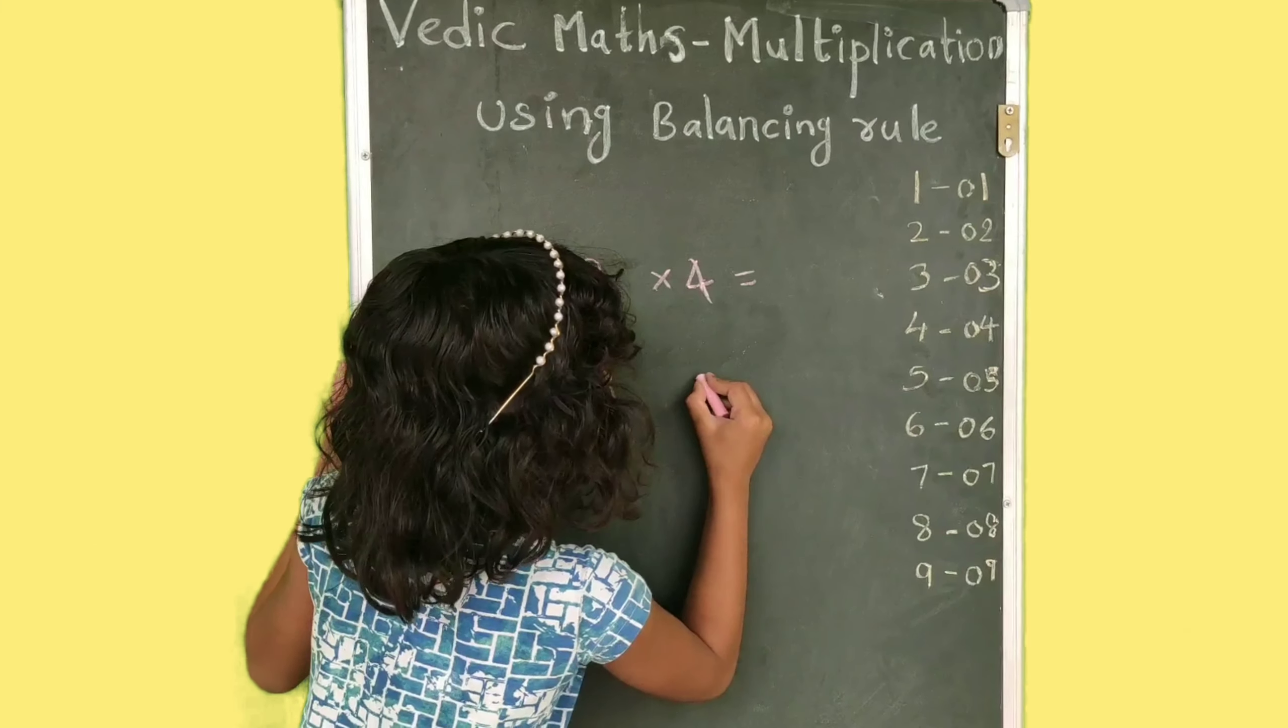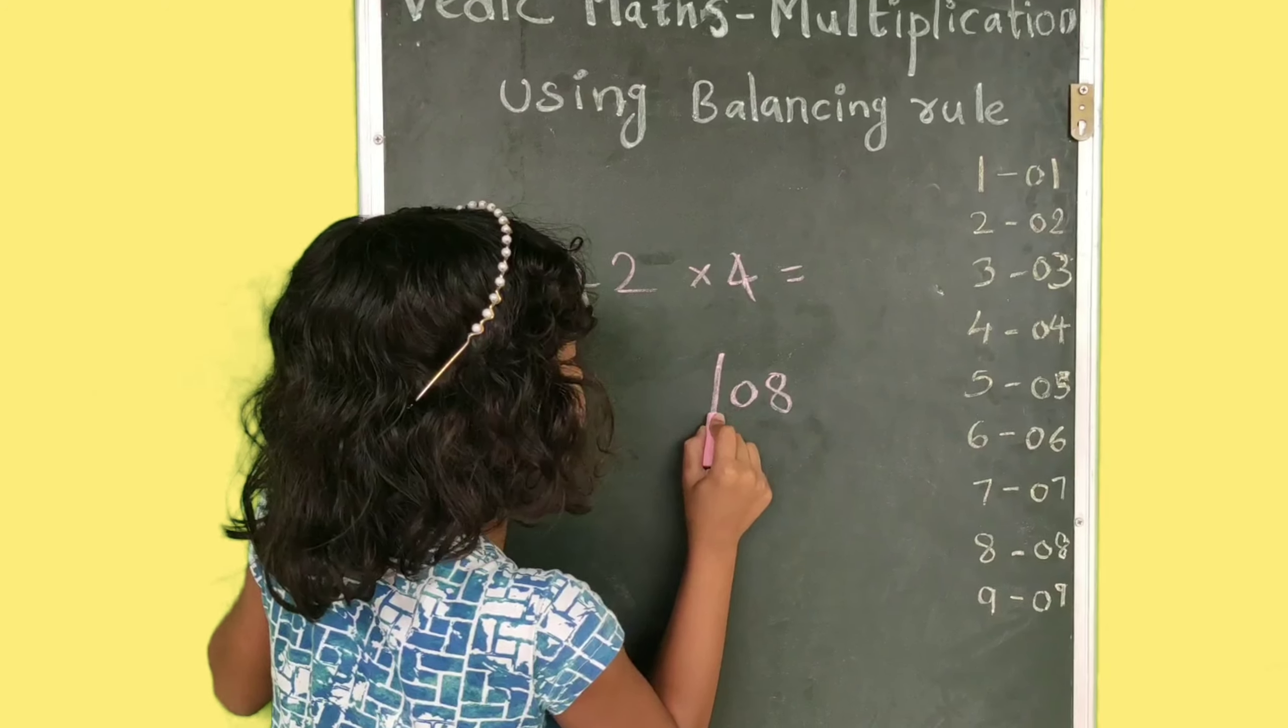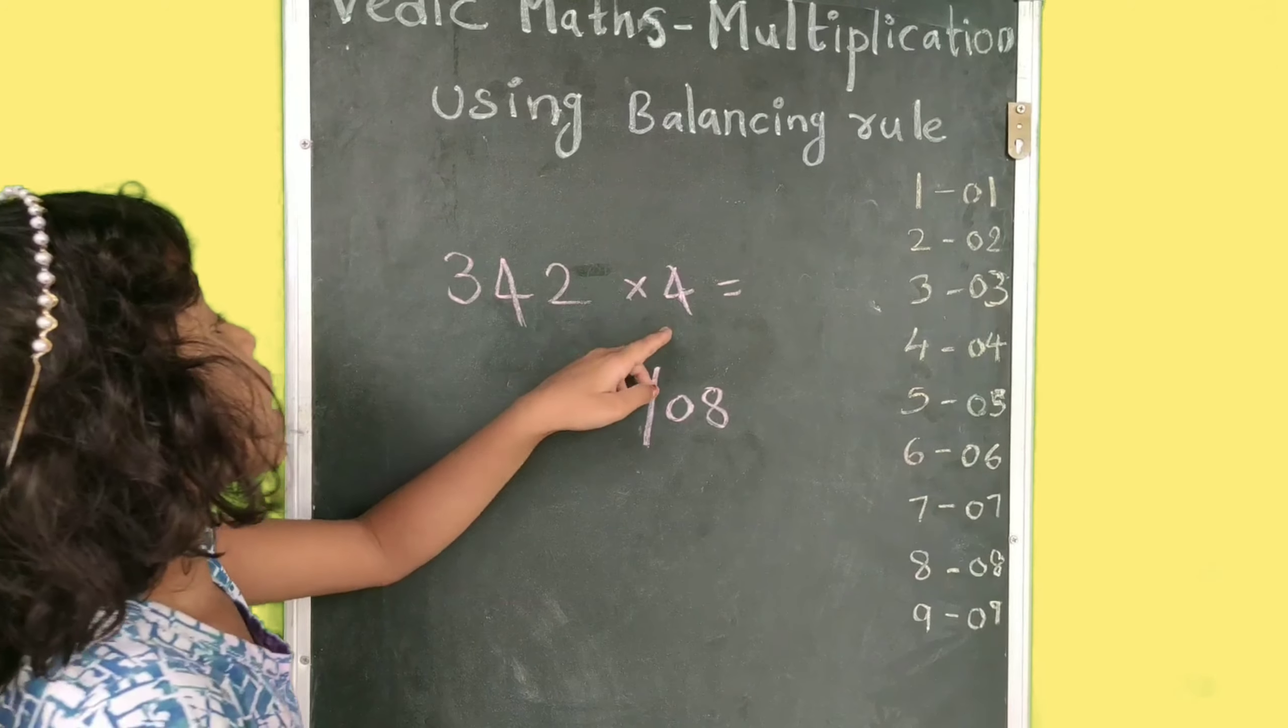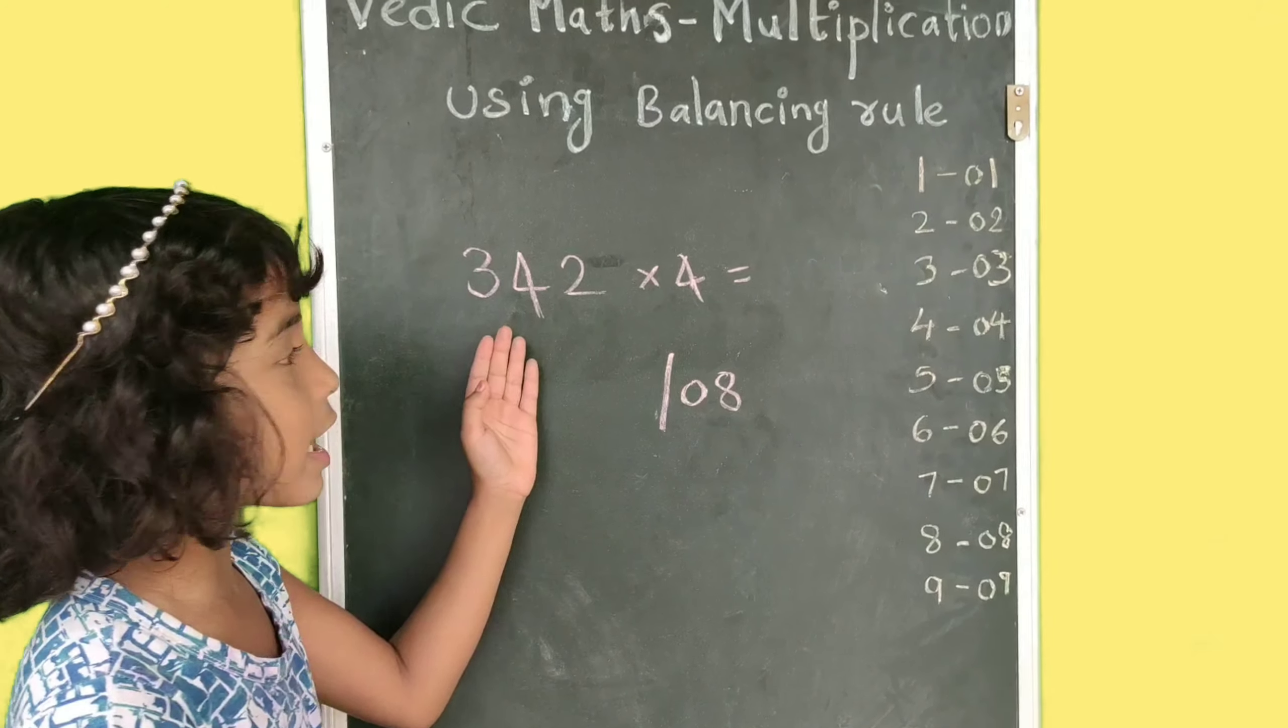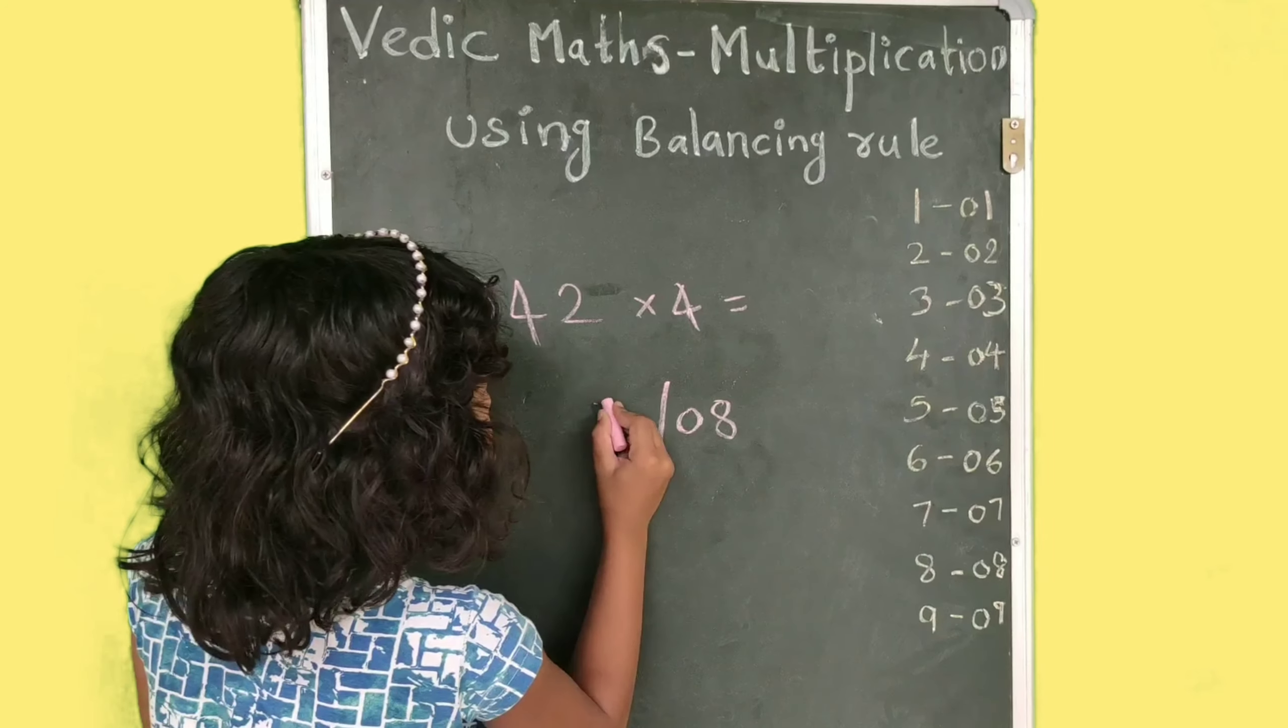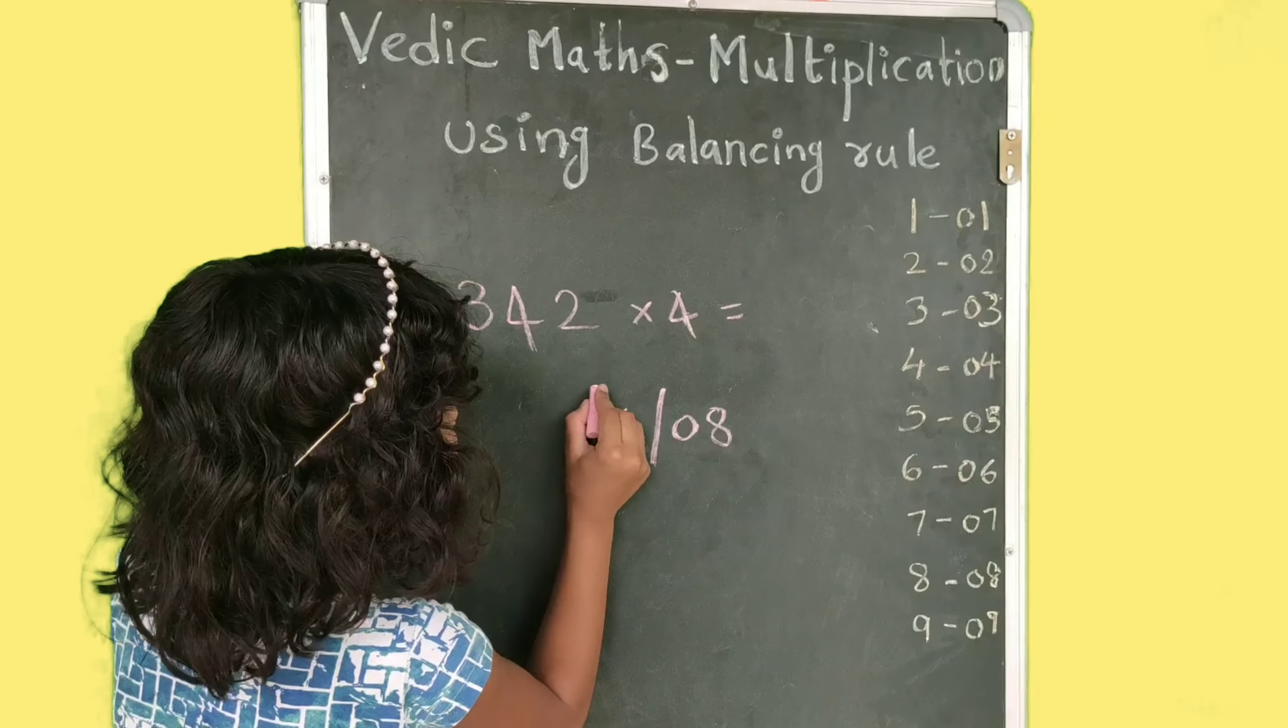So ikda manam 08 ni viz kuaoli. Slash, e4 ni e4 ni multiply chedhaan, four four star sixteen. Ikda manakoo two digit sunnaya kaapatti. Manam a2 digit sunnaya viz kuaoli.